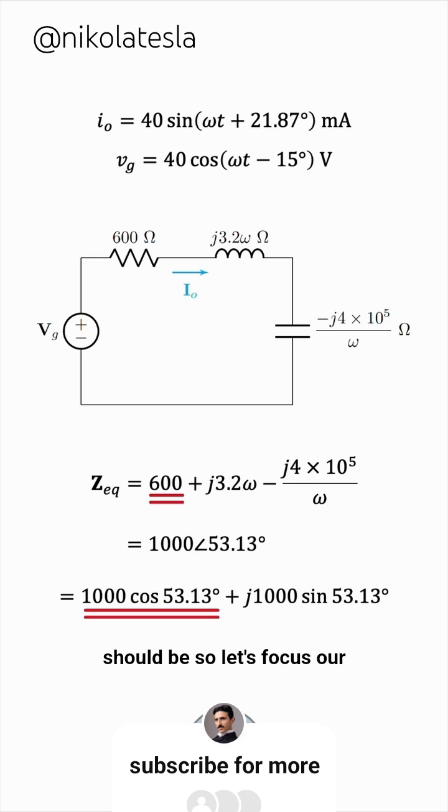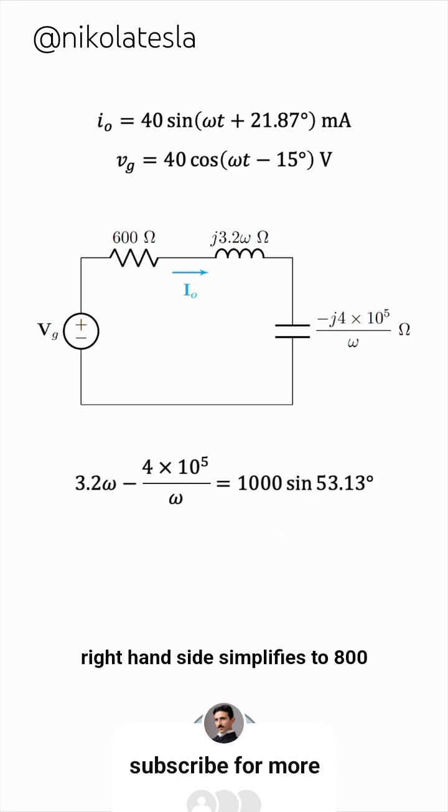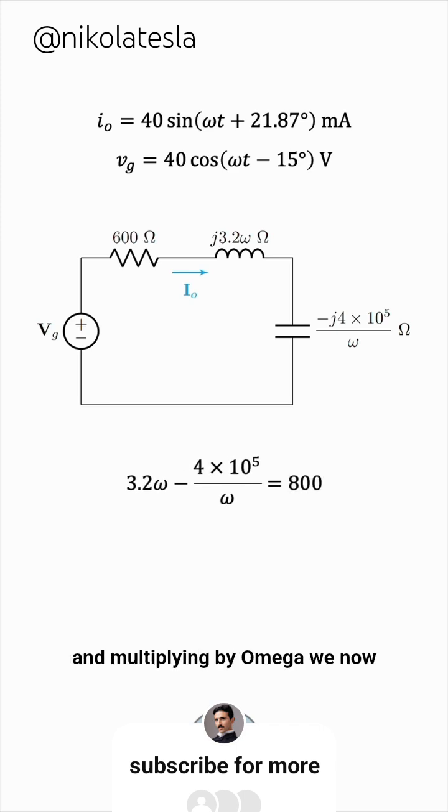So, let's focus our attention on the imaginary part. We'll factor out a j and compare imaginary to imaginary. Very good. The right-hand side simplifies to 800. And multiplying by omega, we now have this quadratic equation, which we can easily solve.